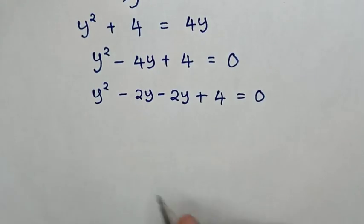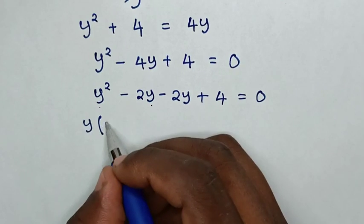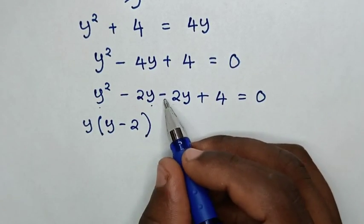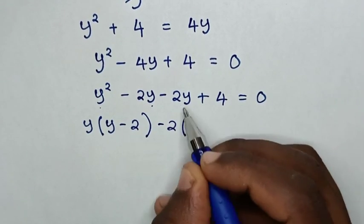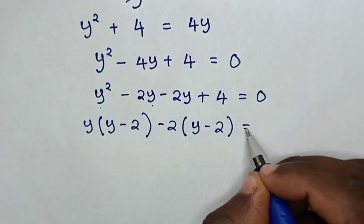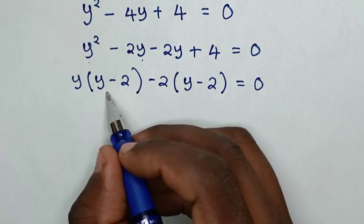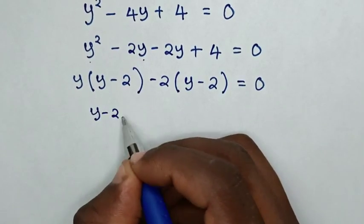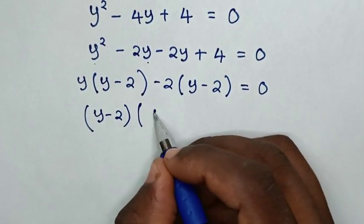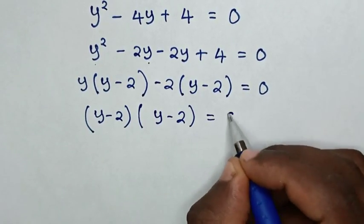In the next step, y is common in the first two terms, so we factor out y, giving y(y minus 2). Then negative 2 is common in the remaining terms, giving negative 2(y minus 2). So the factored form is (y minus 2)(y minus 2) is equal to 0.